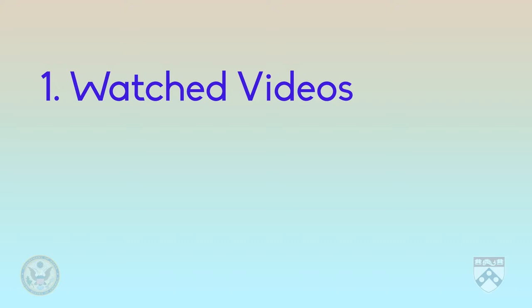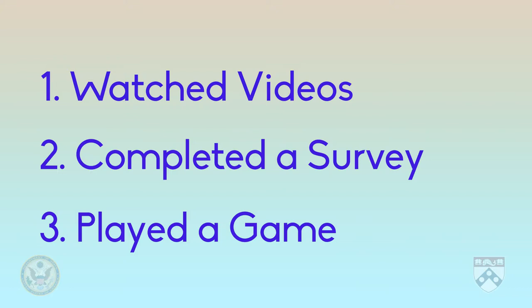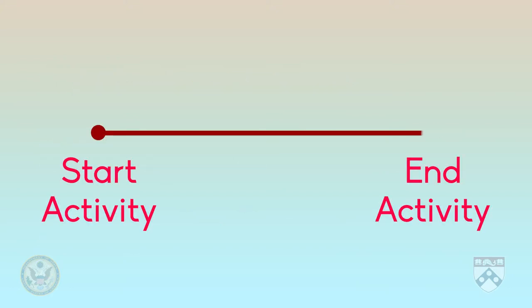Let's start with the simple past. When an action begins and ends in the past, then we use the simple past. For example, before this video, you watched several videos, completed a survey, and played a game. All of these actions started and ended before now. That's why we put them in the simple past.